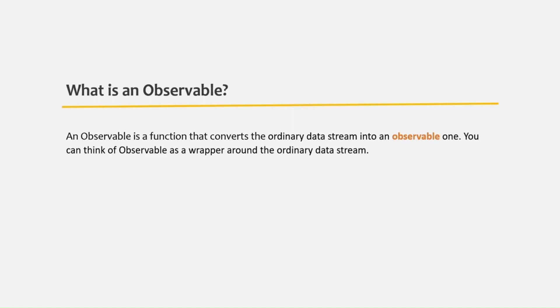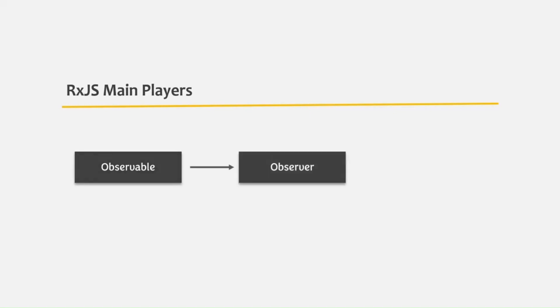We also learned that RxJS uses the observer design pattern behind the scenes. In RxJS we have two main players: the observable and the observer. The observable is the one which emits data, and the observer is going to use that data. In order to use the data emitted by the observable, the observer has to subscribe to it — otherwise it cannot be notified about or use any emitted data.